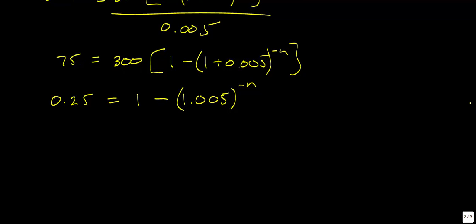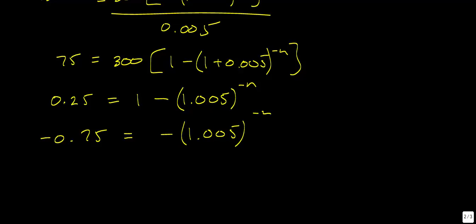Noticing the like terms, I subtract 1 from both sides, giving negative 0.75 equals negative 1.005 raised to the power of negative n. Because both sides are negative, I can divide by negative 1, effectively removing both negatives: 0.75 equals 1.005 raised to the power of negative n.